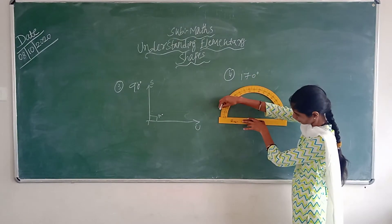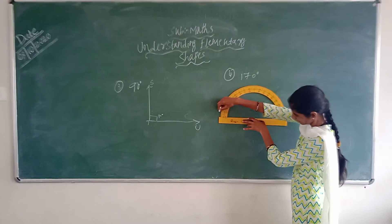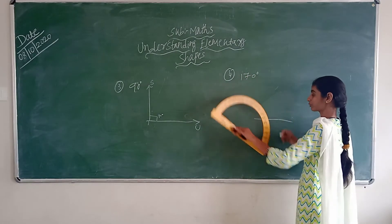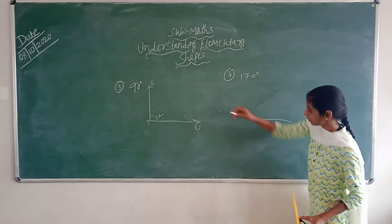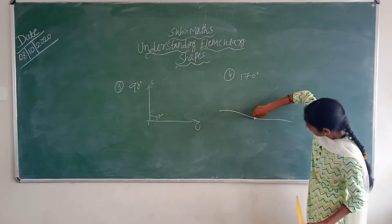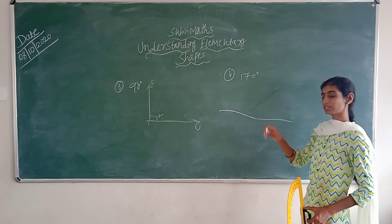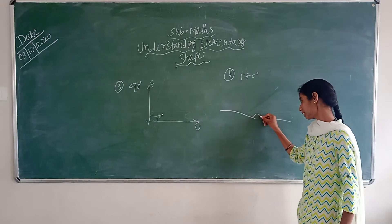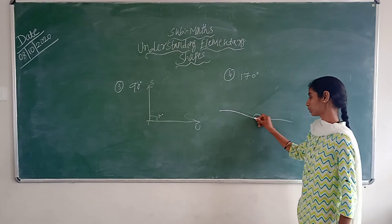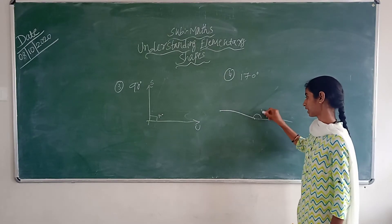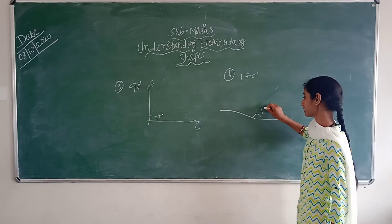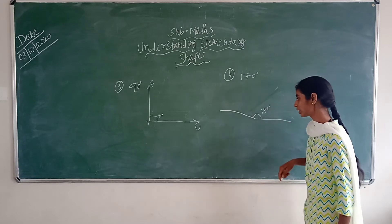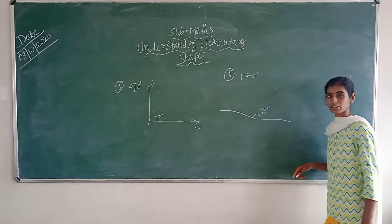So it is very simple — it is here. Then after, you have to draw a line like this. And now it will be 170 degrees. So it looks like this.